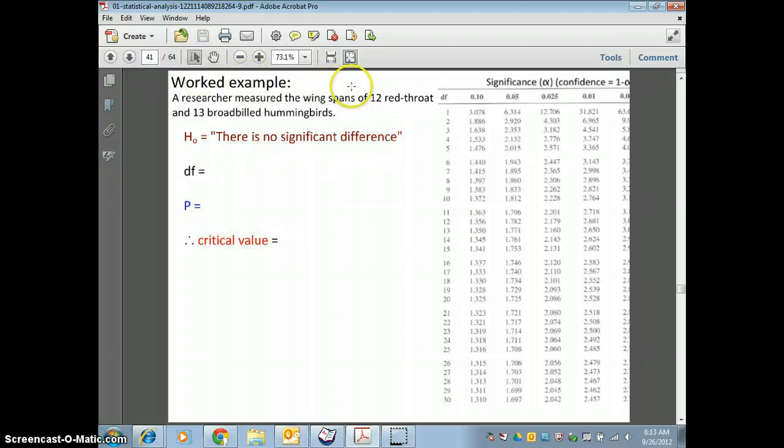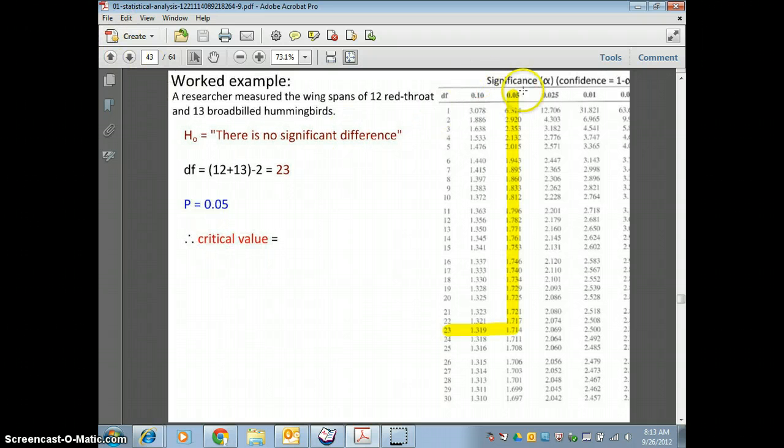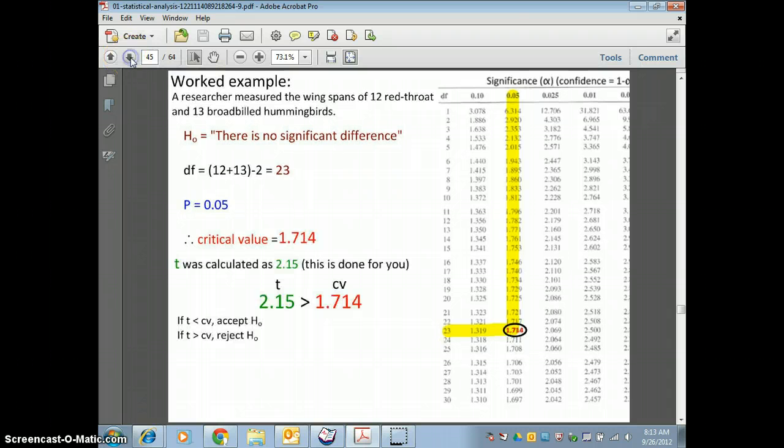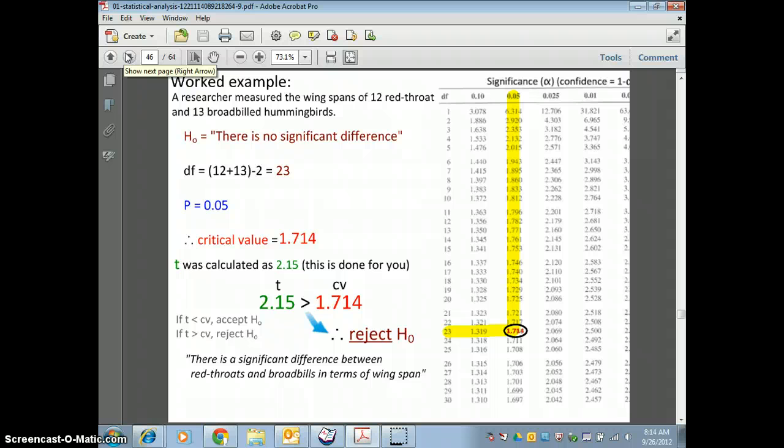Back to the hummingbirds. There was 12 red throat and 13 broad-billed, and we're saying that there's going to be no significant difference is our null hypothesis between the two groups. Our degrees of freedom, then, is the 12 plus the 13 minus the 2 is 23, so we'd find 23 on the chart. We're always going with 0.05, because that's our minimum that we have to have confidence to get 95% confidence. And then the critical value is 1.714, and then they already did all the data calculations, so 2.15 was the T calculated value. Because it is greater than 1.714, you can reject the null hypothesis. So, when you reject the null, then you're saying that there is a significant difference between the red throats and the broad-billed wingspan.